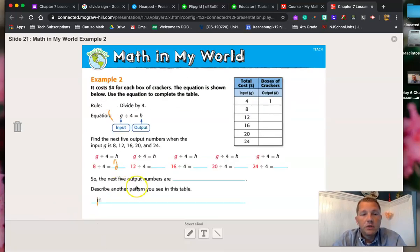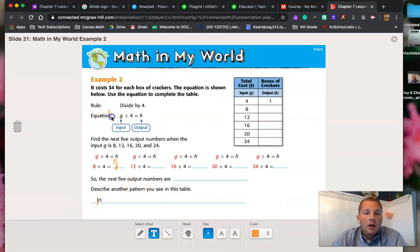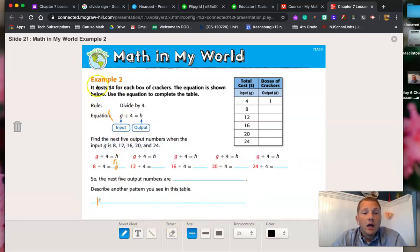Alright. So this one's our next chart in total. It says the cost, ooh, that's fun. It costs $4 for each box of crackers. The equation is shown. Here's our equation. Alright. And then it says, use the equation to complete the table. So G is my input. Trying to find out H, my output. And they're telling me that I'm dividing by 4.